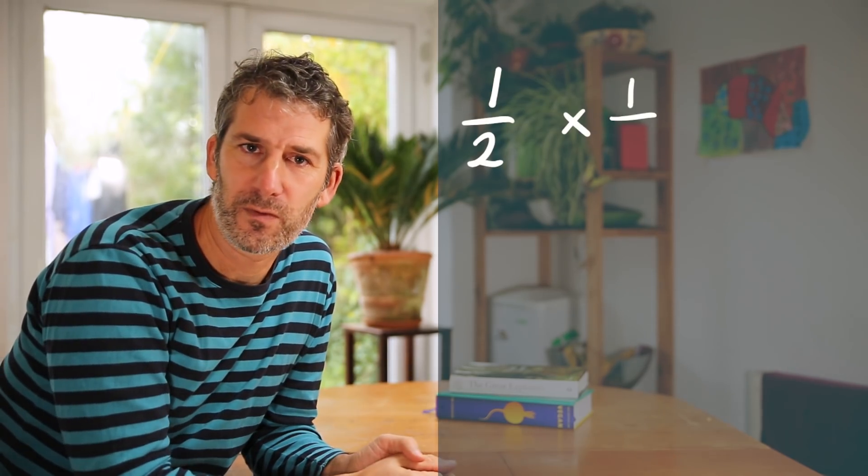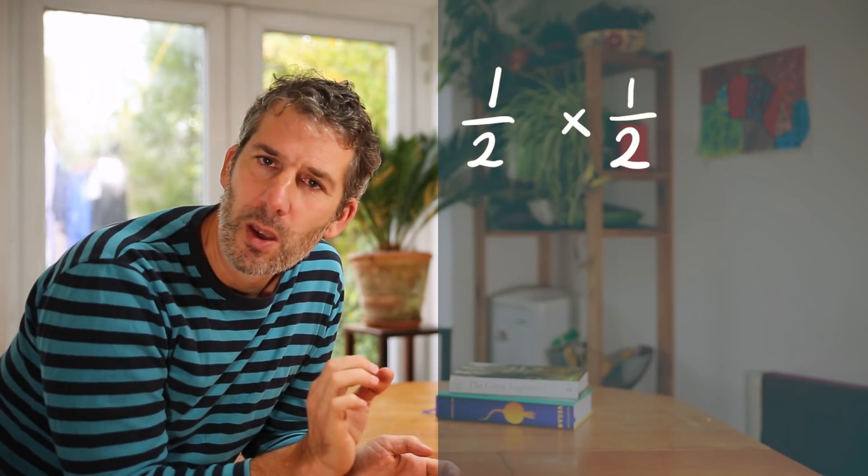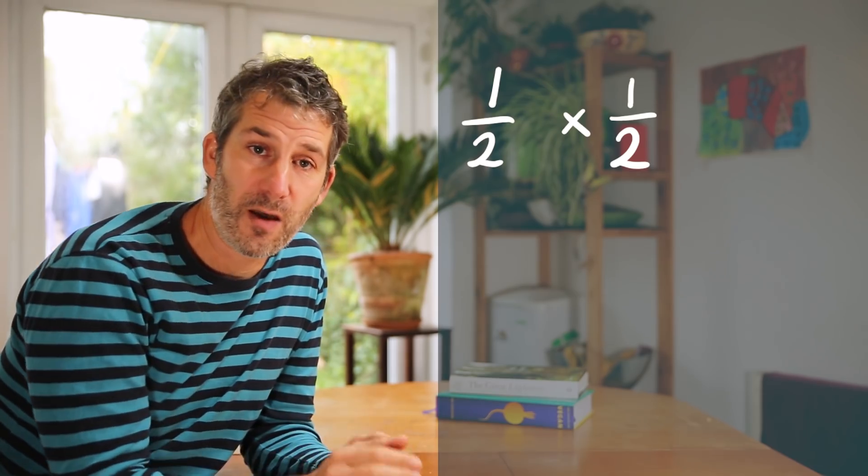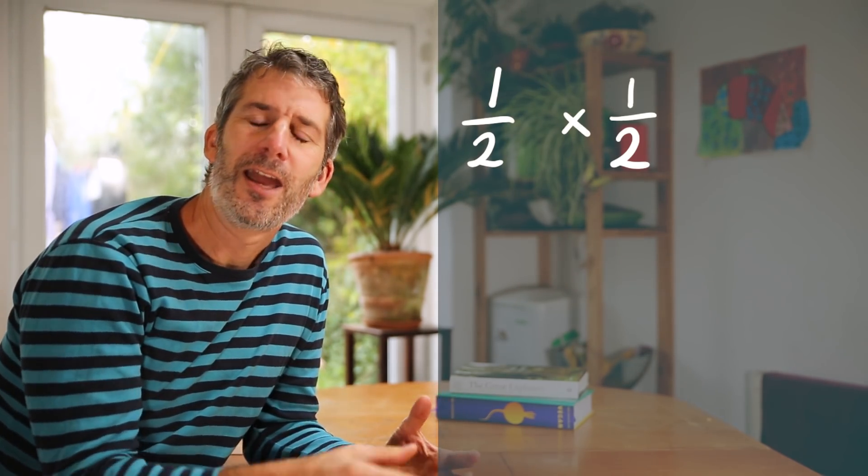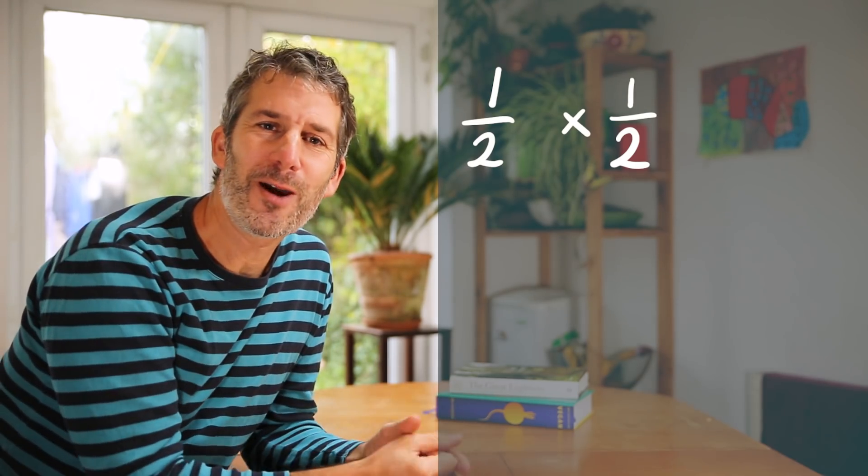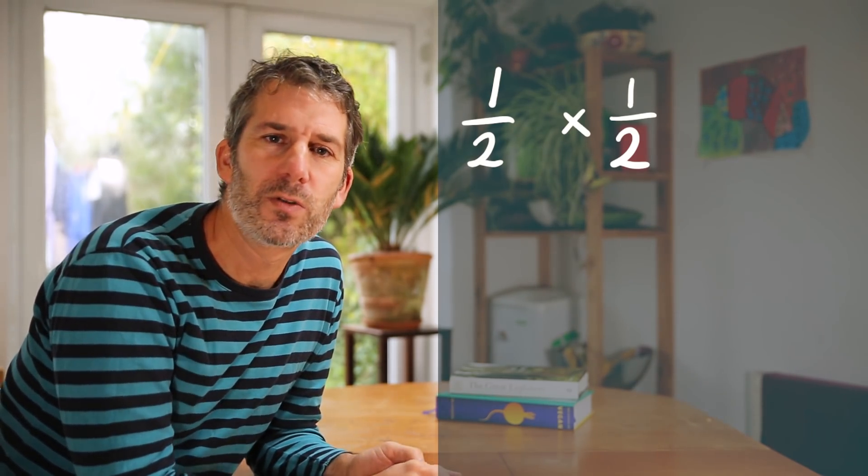That's how to multiply a whole number by a fraction. But what about when we want to multiply two fractions together? Let's start with a half times a half. What would that be? Well if we think of it as a half of a half it makes a bit more sense. And as a maths teacher and as we're talking about fractions I feel obliged to talk about pizzas.